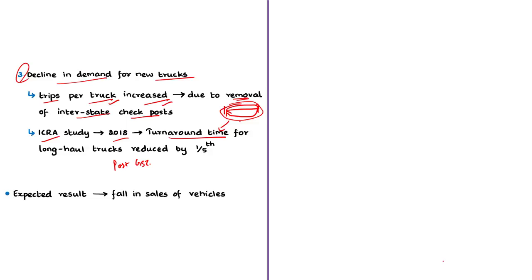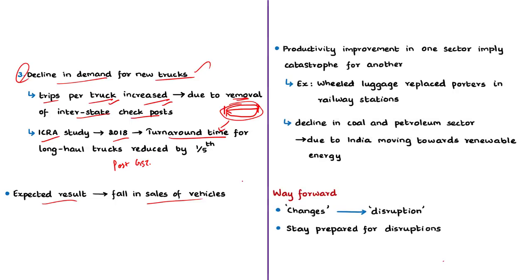These are the three reasons the author mentions for the slowdown in the automobile sector. The author argues that based on the reforms and policy changes in the automobile sector, we should have expected vehicle sales to fall and prepared alternatives. Our reaction to the slowdown in the automobile sector is indicative of how we might respond to future shocks from other sectors as well.